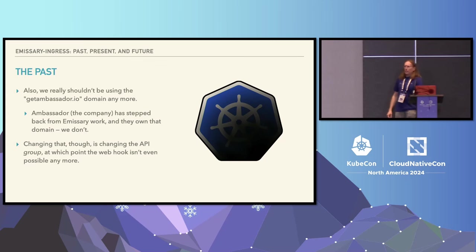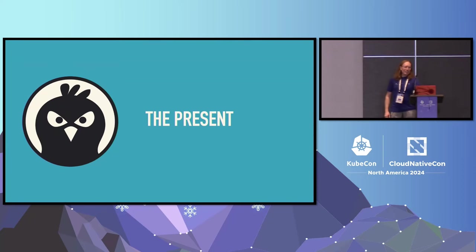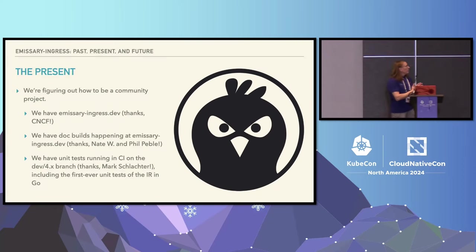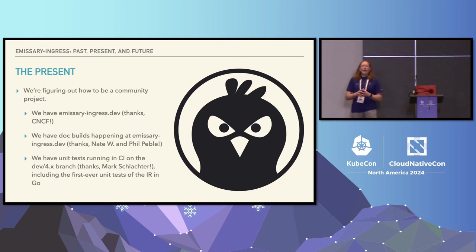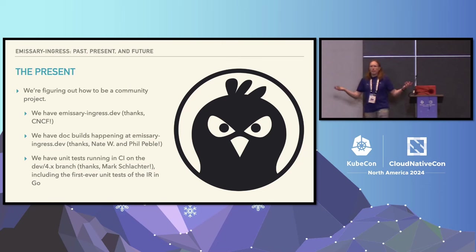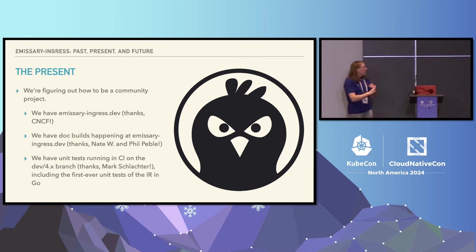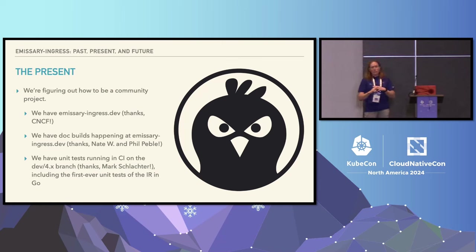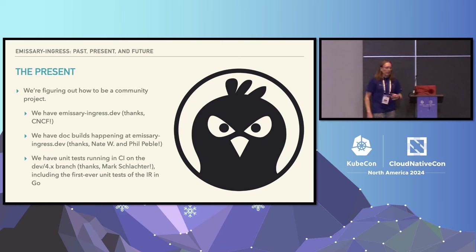This has been a really fun debate for the last several months. That brings us up to the present. I talked in Paris about the fact that we had to go and become a community project again, as opposed to effectively having corporate backing — that's what we've been working on. We now have the emissary-ingress.dev domain, with doc builds happening over there. Huge props to Nate from the CNCF and Phil, one of the new Emissary maintainers. We have successfully gotten unit tests working on the Dev4.x branch, which is where Emissary 4 development is happening.